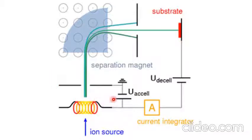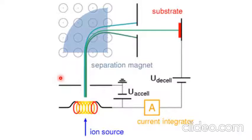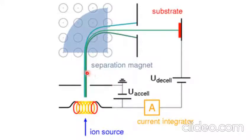There are different types of accelerators used in ion implantation equipment. Some accelerators are known as medium current beam accelerator, high current beam accelerator, high energy accelerator, and very high energy accelerator. The medium current beam accelerator has a current in the range of 10 microampere to 2 milliampere, while the high current beam accelerator has a current in the range of 30 milliampere.